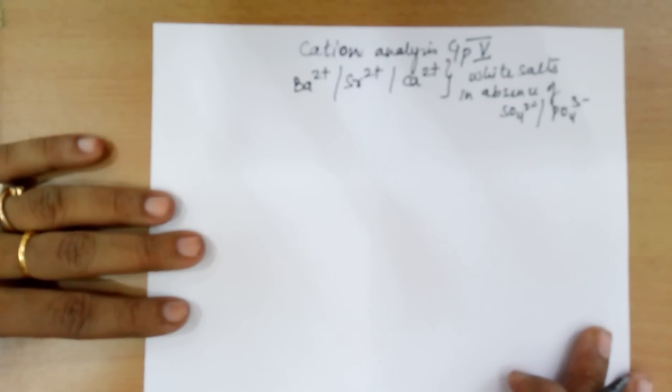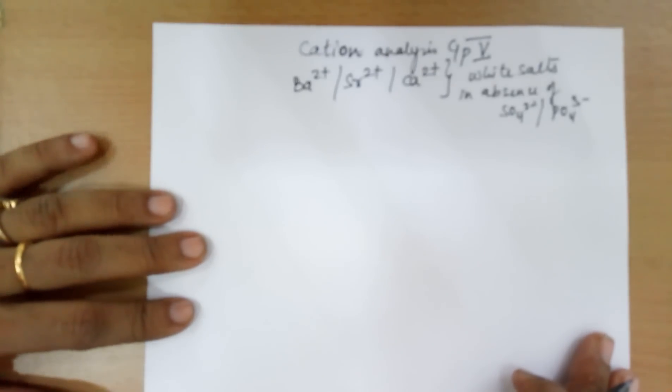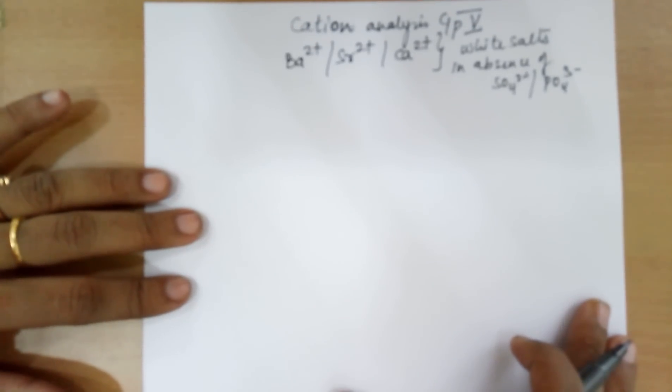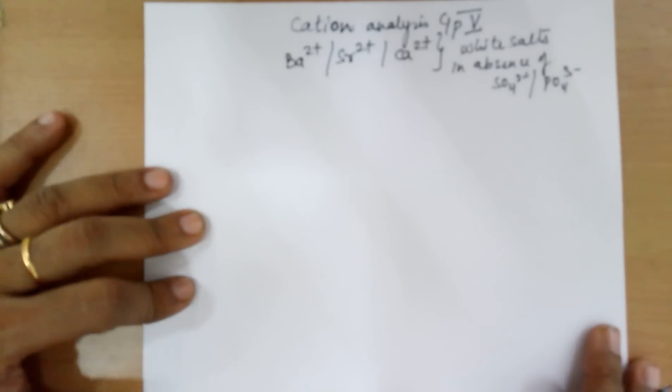With sulfate and phosphate, you would never be given group 5 as these salts of sulfates and phosphates of barium, strontium and calcium are insoluble.